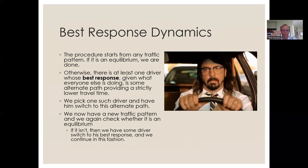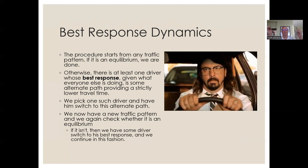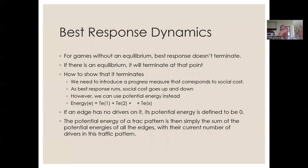Best response dynamics is a way to find that equilibrium. The procedure starts from any traffic pattern. If it's already an equilibrium, we're done. Otherwise, there's at least one driver whose best response — given what everyone else is doing — is some alternative path with a lower travel time. We pick one such driver and have them switch to that alternate path, yielding a new traffic pattern. We check whether it's an equilibrium and, if not, have another driver switch to their best response, continuing until no further switches are possible. For games without an equilibrium, the process doesn't terminate, but if an equilibrium exists, it will terminate there.